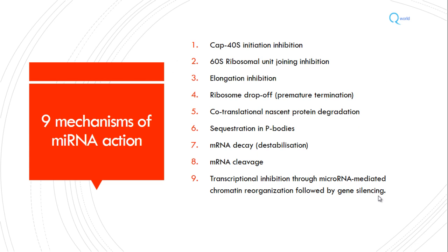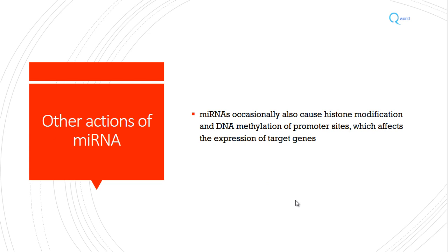Other proposed mechanisms of micro RNA action include: cap-40S initiation inhibition, 60S ribosomal unit joining inhibition, elongation inhibition, ribosome drop-off, co-translational nascent protein degradation, sequestration in P-bodies, mRNA decay or destabilization, mRNA cleavage, and transcriptional inhibition through miRNA-mediated chromatin reorganization followed by gene silencing. Additional actions sometimes seen include histone modification in DNA and DNA methylation of promoter sites, which can affect expression of target genes.